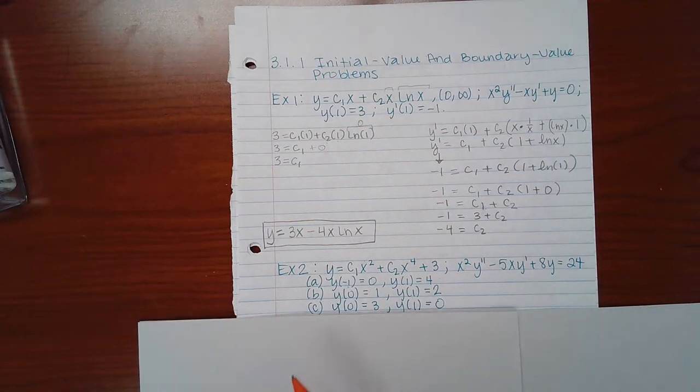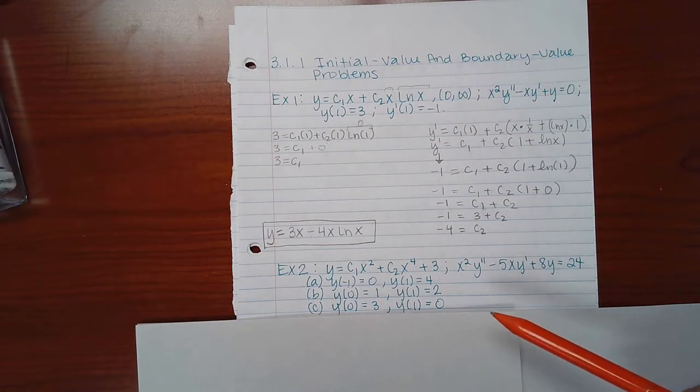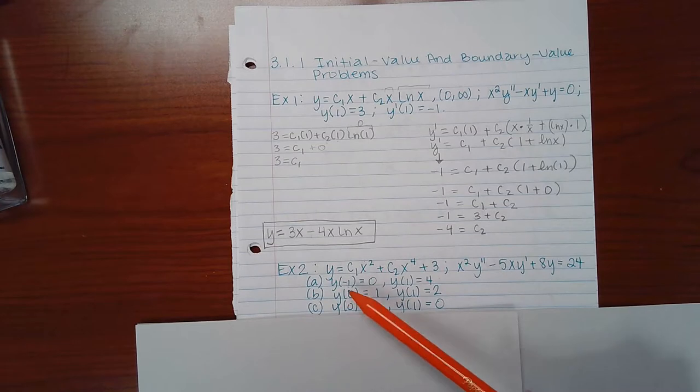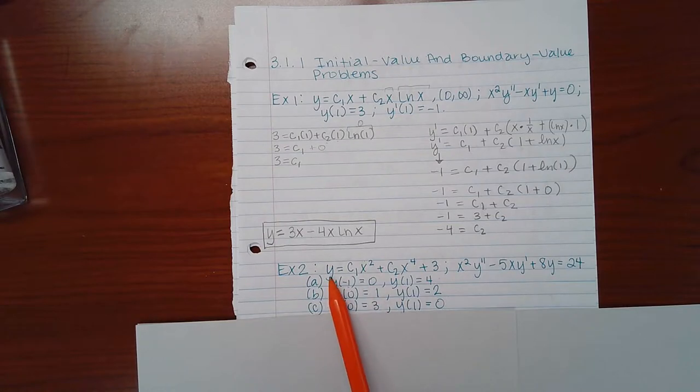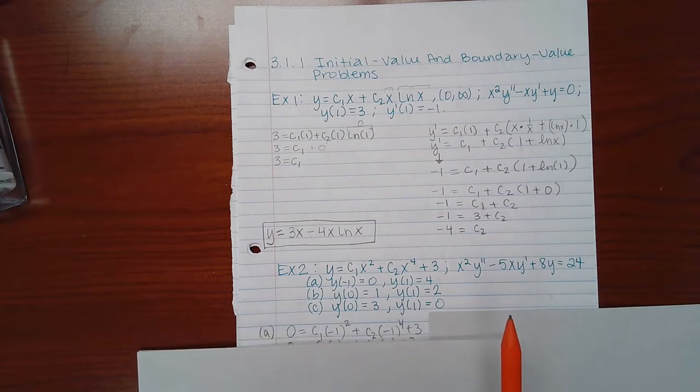Okay, we left off with example 2, and we were going to try part A. So for part A, when x equals negative 1, y equals 0. So this will become 0, and the x's here will become negative 1's. And so that's what we have here in this line.